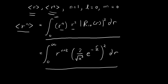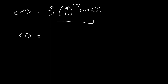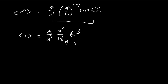For the expected value of r, we substitute n=1. When n=1, we get (a/2) to the power of 4, which is a⁴/16. Then we have (1+2) factorial = 3! = 6. Some terms cancel, and in the end we get 3a/2. This is the expected value of r.